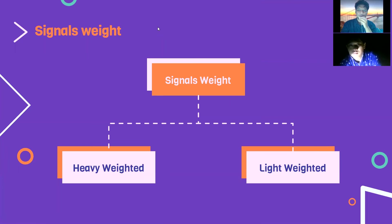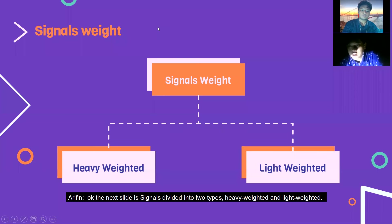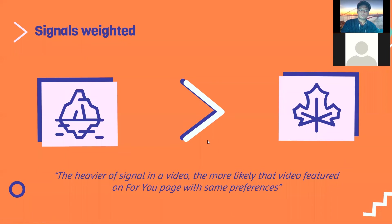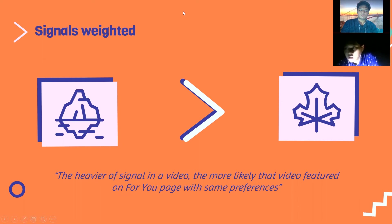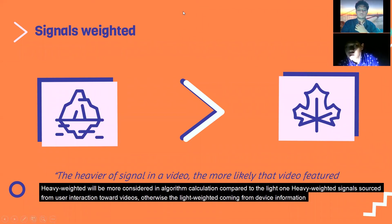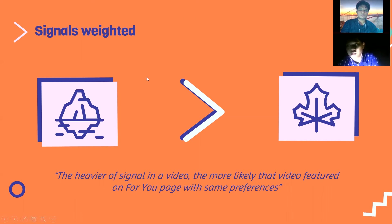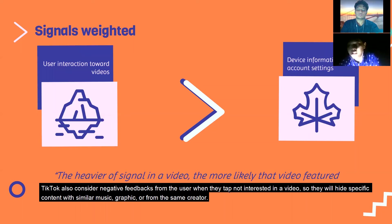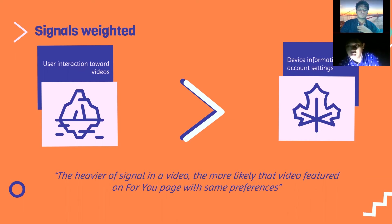These signals are divided into two types: heavyweight and lightweight. Heavyweight signals are more heavily considered in the algorithm's calculation and come from user interaction with videos. Lightweight signals come from device information and account settings. The heavier the signals on a video, the more likely that video will be featured on For You Pages with similar preferences. TikTok also considers negative feedback — when a user taps 'not interested' on a video, TikTok will hide content with similar music, graphics, or from the same creator.